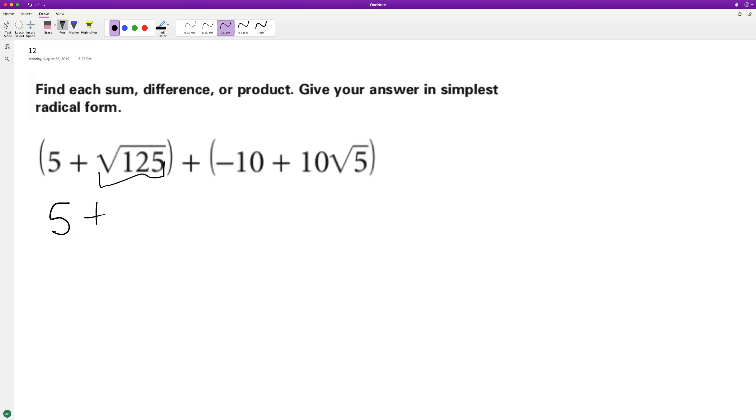We can break square root of 125 down into 25 times 5, and then we have our minus 10 plus negative 10 is the same thing as minus 10, and then plus 10 root 5.